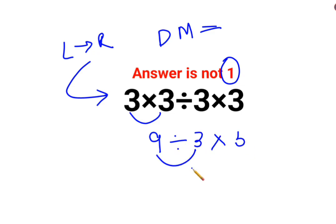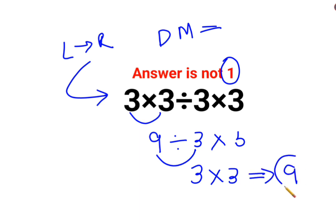So 9 divided by 3 is 3, multiplied by 3. The answer for this question is supposed to be 9.